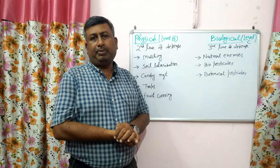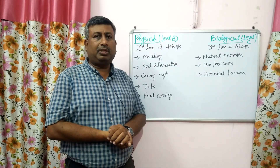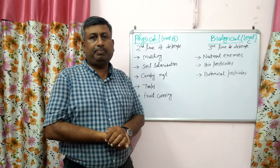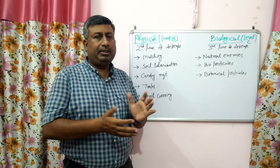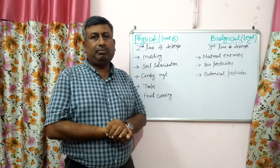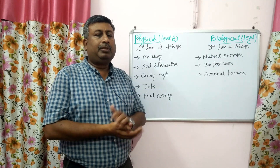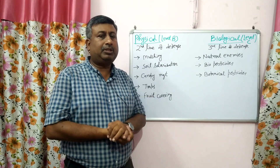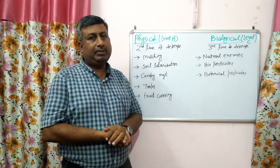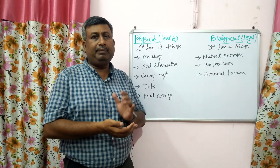Hello students, I'm Dr. Amit Bhatnagar, working as Senior Research Officer in the Department of Agronomy at G.B. Pant University of Agriculture and Technology, Pantnagar, Uttarakhand. In the continuation of the lecture series related to methods to control insect pests and diseases in organic farming, there are three types of methods: preventive methods, physical methods, and biological methods, known as Label A, Label B, and Label C respectively.